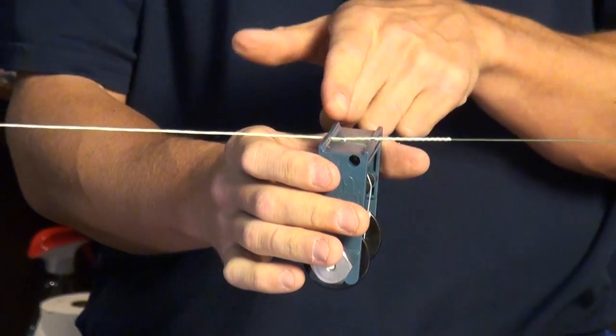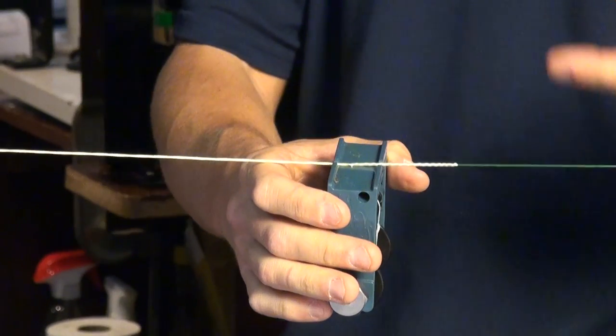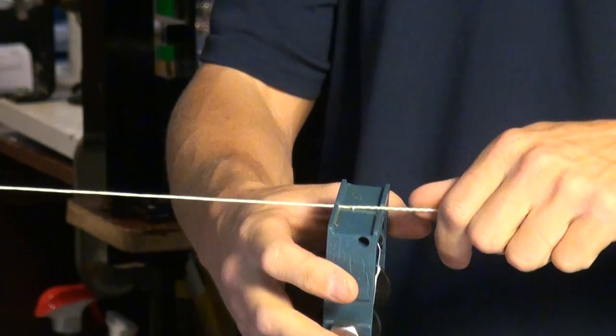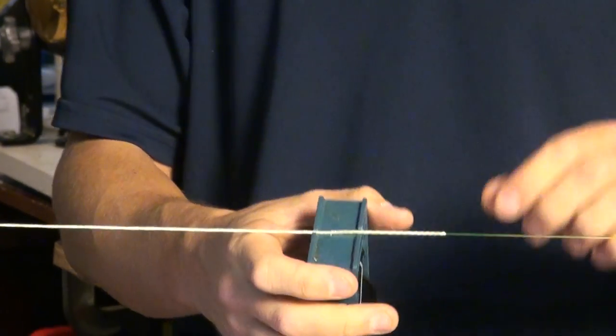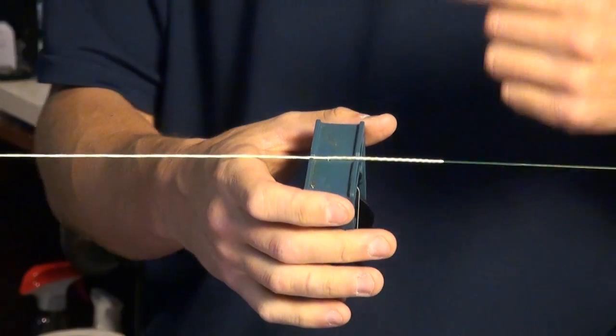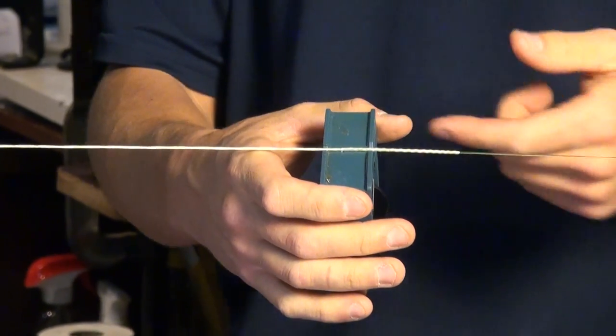And I'm going to go until I cover the series of loose wraps that I did initially. Once they're completely covered, then we're good. You can see as I flip this over, it's doing the tight wraps that are covering them back up.